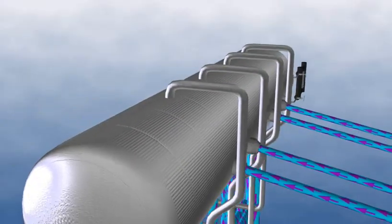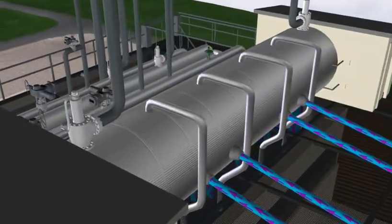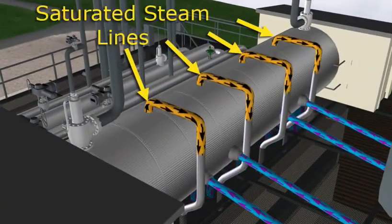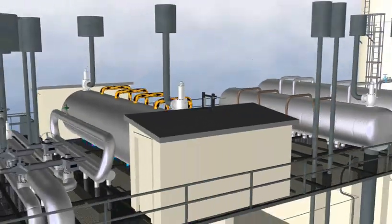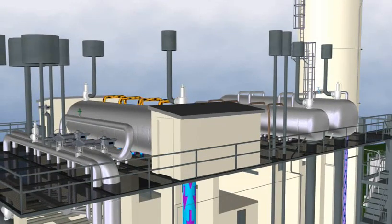As in the LP and IP drums, saturated steam from the secondary separators is piped away to super heaters for additional steam conditioning.